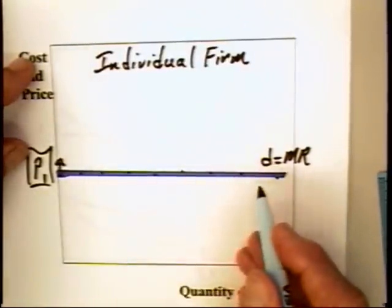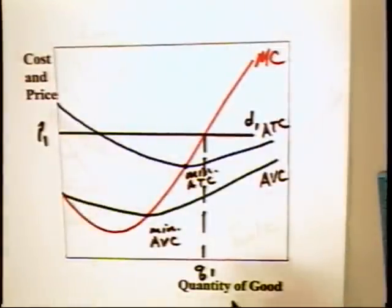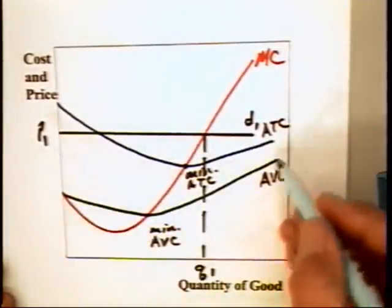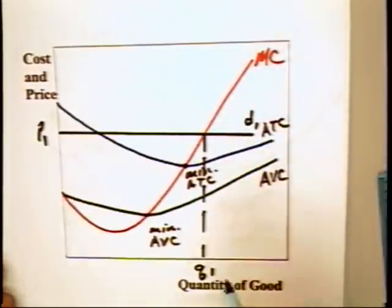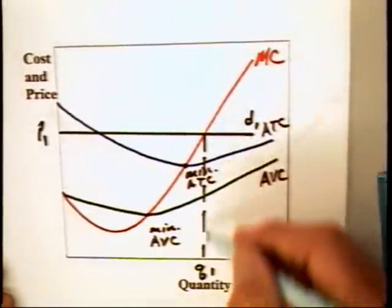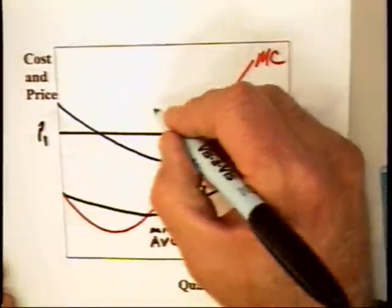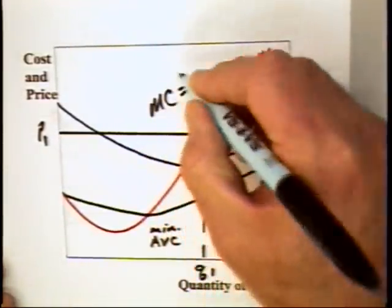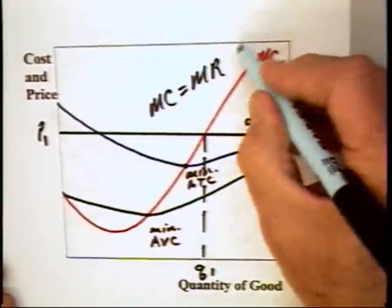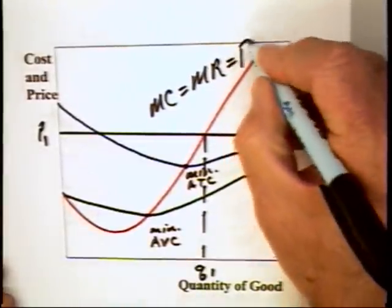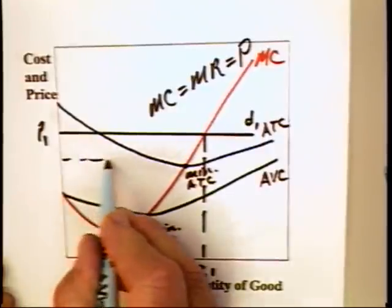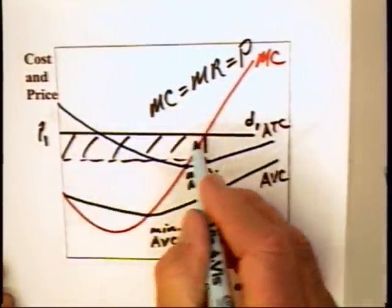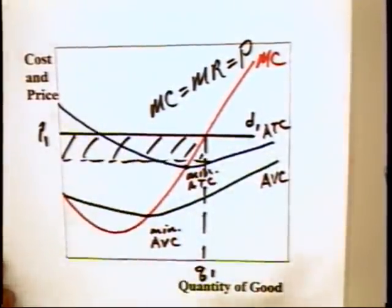We then took this demand curve and combined it with a set of cost curves that look like this. We developed those cost curves with some care. We noted that the perfect competitor in the short run will produce quantity Q1. That is, will produce where marginal cost is equal to marginal revenue, which in the case of the perfect competitor is equal to the price. In this case, the firm can be making profits equal to that.